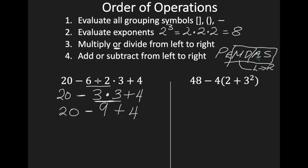Can we add or subtract from left to right? Going from left to right, notice subtraction is first. So I will subtract first — 9 from 20 is 11. And my last step will be to add the 4 to the 11 to give me a value of 15. And that's my answer.